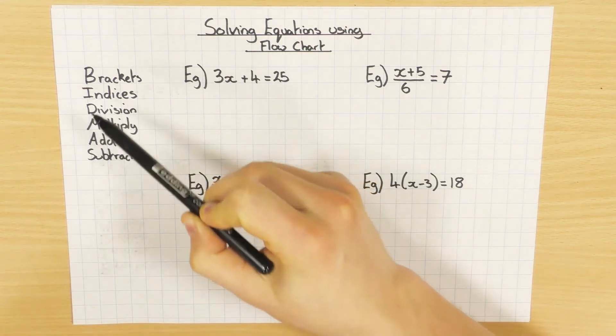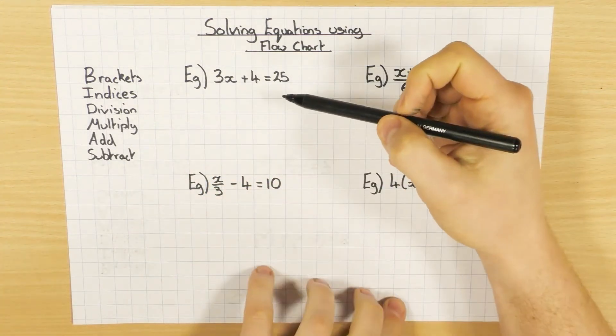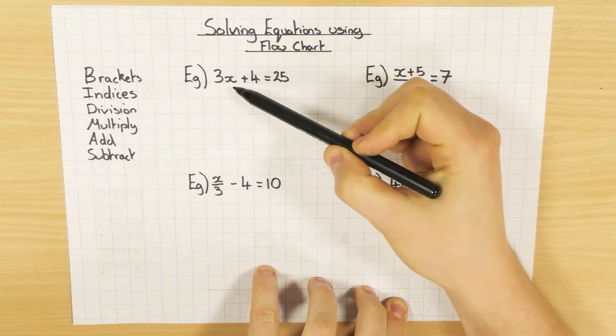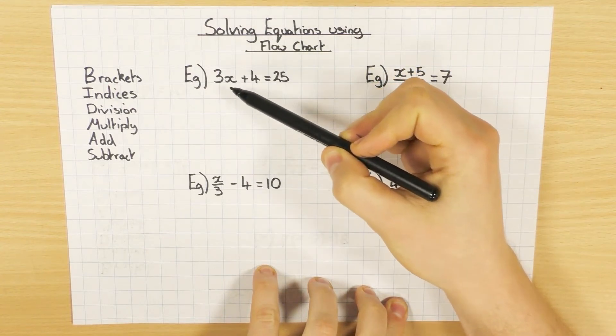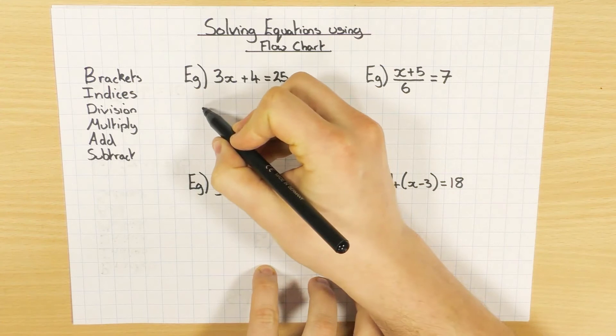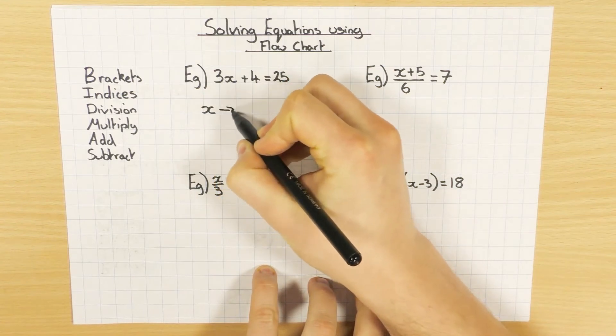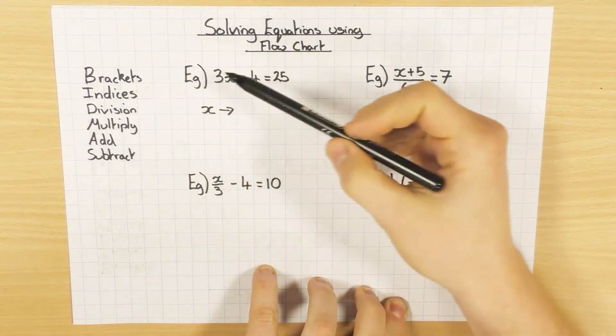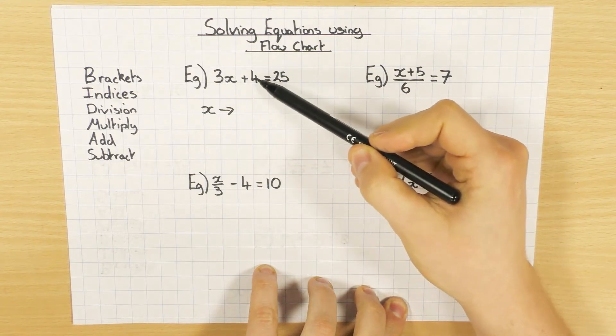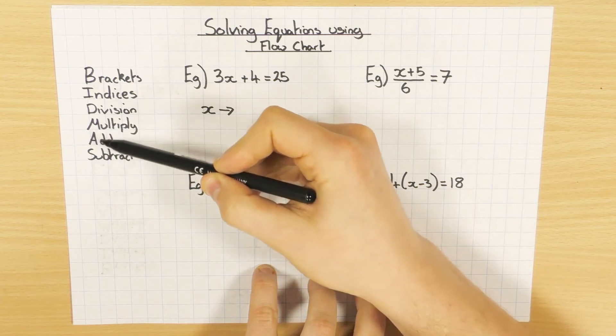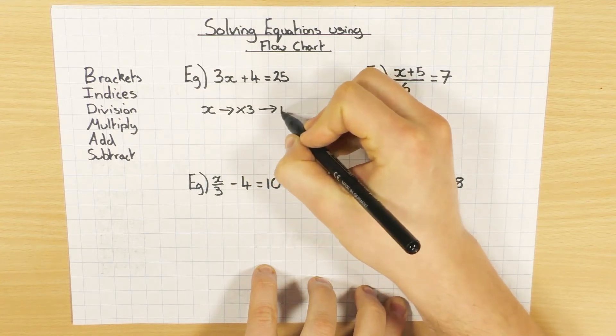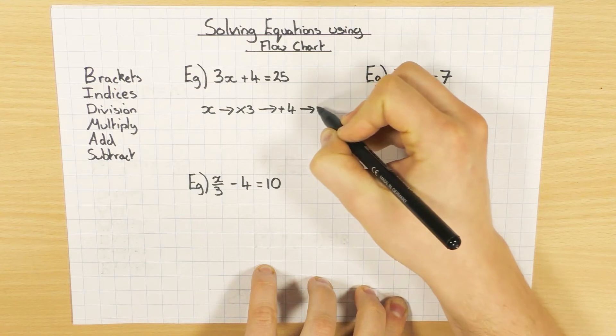So when we're thinking about the flowchart, we have to bear those things in mind. Let's start off with the first one then. We've got 3x plus 4 equals 25. When we say solve, that means we're trying to find out the value of x. We're going to use a flowchart to do this. So we start off with the x, and we ask ourselves what do we do to x. We go to our BIDMAS. Well, currently we're timesing by 3, so 3x means we're timesing by 3, and we're adding 4. Multiplication is before addition, so we're going to be timesing by 3 first, then we're going to be adding 4, and we're going to get our answer of 25.